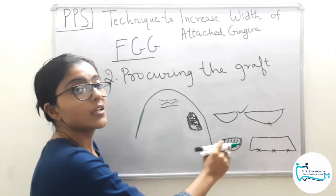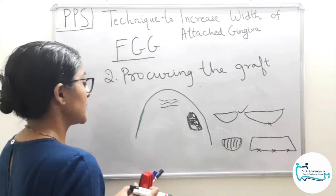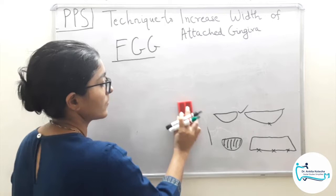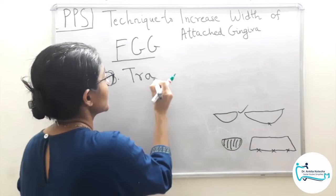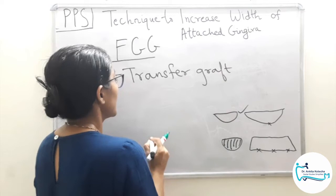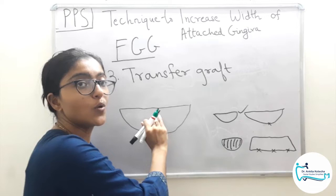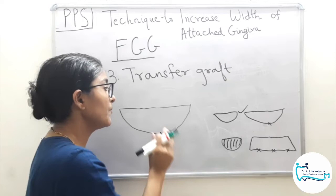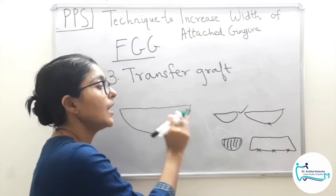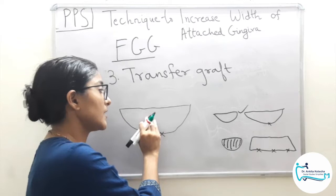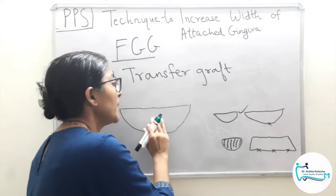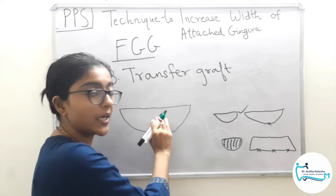The next step is therefore to transfer the graft tissue. Remove the sterile cotton gauze from the recipient bed and check for any blood clots — thick clots will hamper vascularity establishment between the graft and the bed. Remove any clots and make the recipient bed free of hindrances.